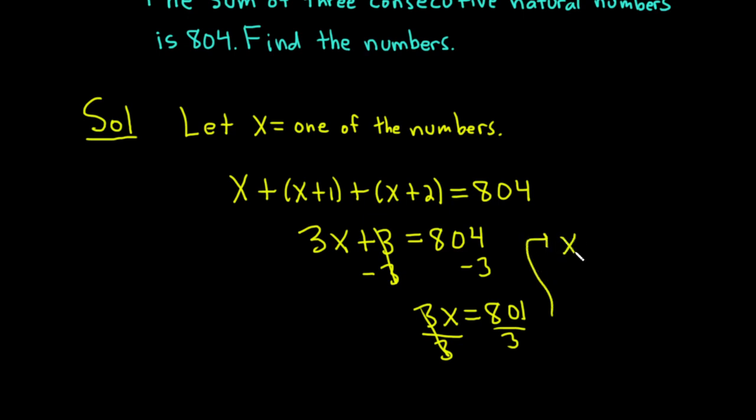We end up with x equals 801 over 3. 801 over 3 is equal to 267. So x is equal to 267.